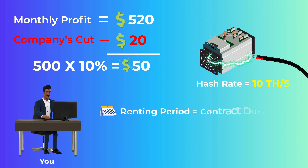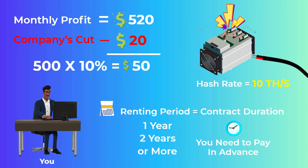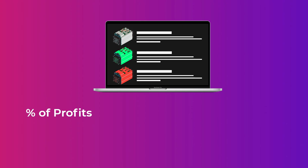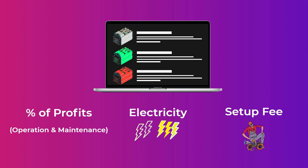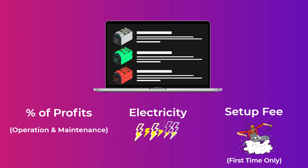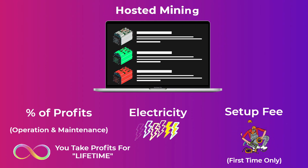The renting period, also called the contract period, may be 1 year, 2 years, or sometimes more, but most of the time you need to pay for the entire duration in advance. Some companies may let you select a miner you want to buy, pay them the money, and then they will buy it and operate it for you. They will take a percentage of the profits for operation and maintenance, you will pay them for the electricity consumed, and you may also pay a setup fee when you first buy a device — but you take the profits for the lifetime of the device. This way of cloud mining is called hosted mining, as the company hosts your miner in their mining farm.